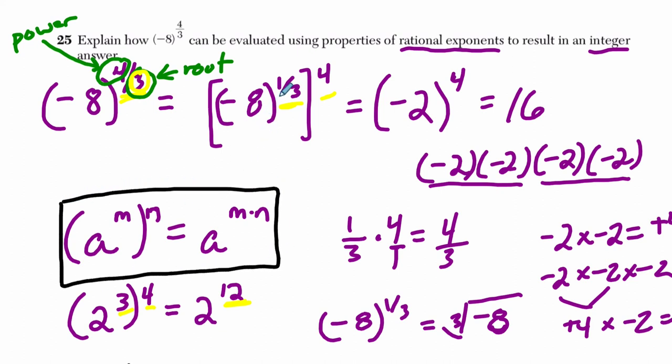And then you could say, first I took the third root of negative 8, which is negative 2, and then raise it to the fourth power to get 16. And that's it. The reason they do that is because they want to make sure you're not just plugging things into a calculator, but understand what is happening mathematically. Alright. Thank you.